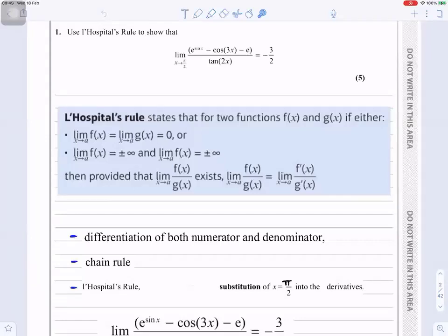Use L'Hôpital's rule to show that the limit as x tends to π/2 of (e^(sin x) - cos(3x) - e) / tan(2x) equals -3/2.